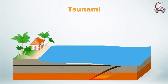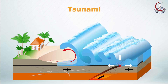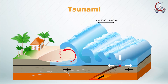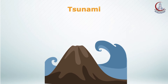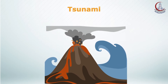Another natural disaster is the tsunami. The word tsunami is a Japanese term that means harbour wave. It is a dramatic effect of certain types of earthquakes, submarine landslides, or volcanic deformation as a result of sudden vertical offset in the ocean floor.